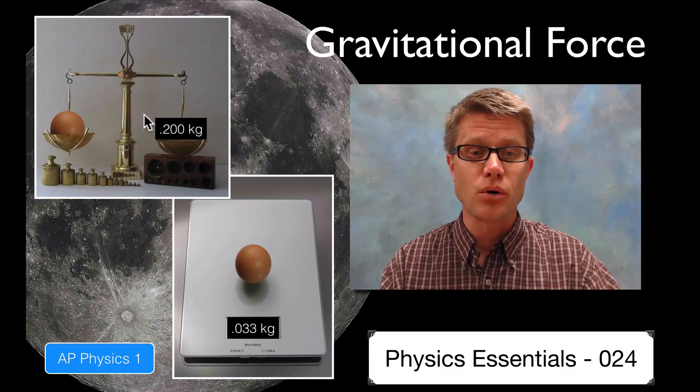There's less gravitational field on the moon. Less force. And that's going to affect both the orange and the weights on the other side. But you can see that the scale is going to give us a lower value.